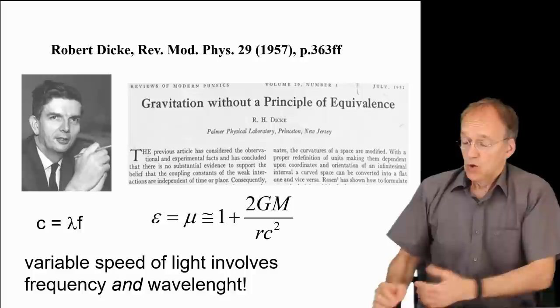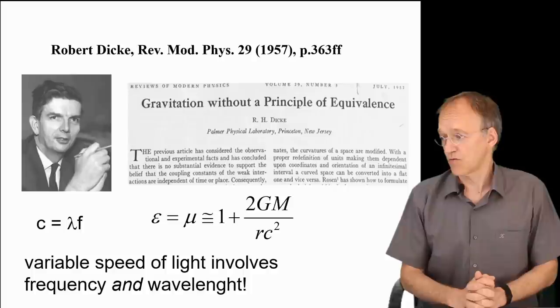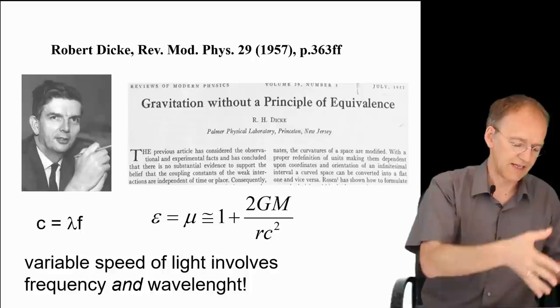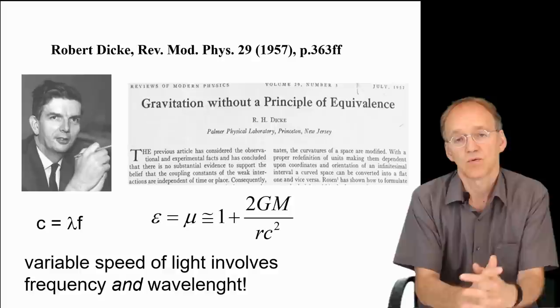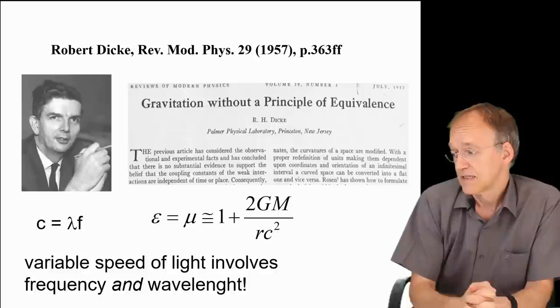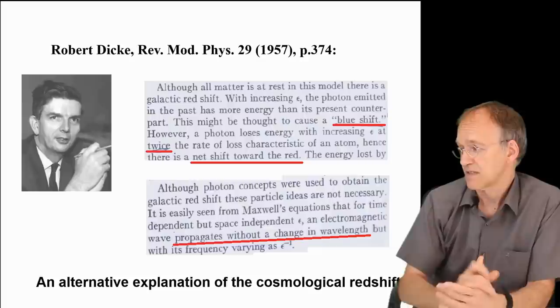It was the American astrophysicist Robert Dickey, who in a fantastic paper in 1957 not only corrected Einstein's original error in 1911, not only drew the relation to Mach's principle, but he provided also an alternative idea how to interpret the redshift.